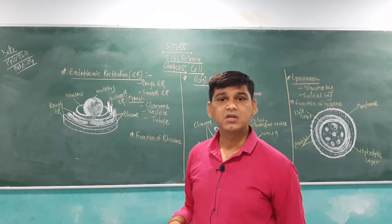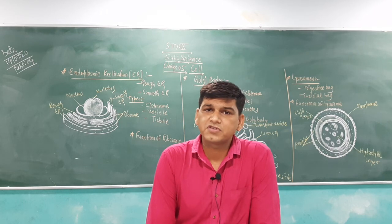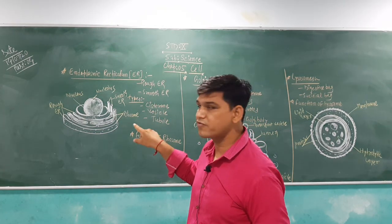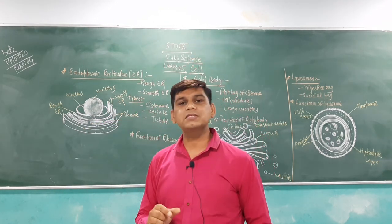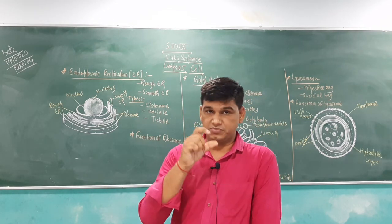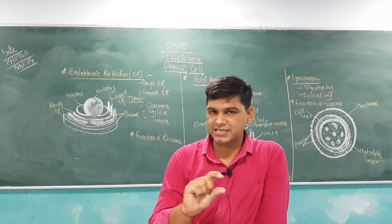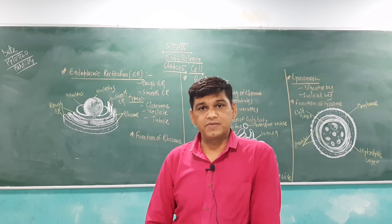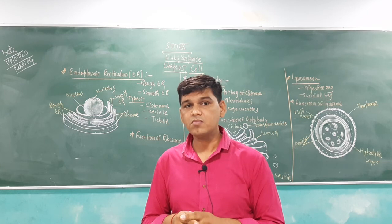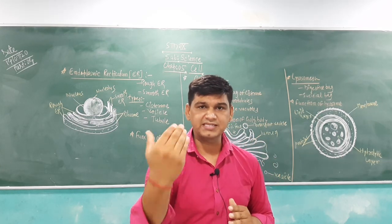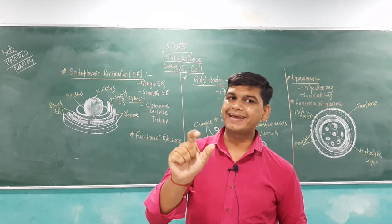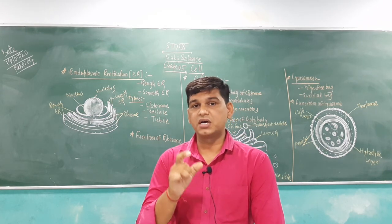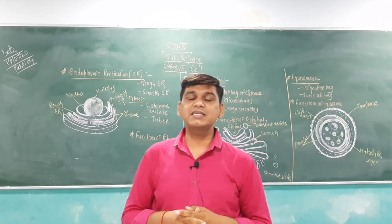First of all, discussing about the ER — that is called endoplasmic reticulum. What do you mean by ER? The endoplasmic reticulum is a tubular network structure. It is a tubular network structure which is found in the cytoplasm. Cytoplasm is what we discussed in previous classes — that is the cell between the cell membrane and nuclear membrane. So endoplasmic reticulum is a tubular network structure found in the cytoplasm. It is like a cylindrical structure of tube with two ends — an opening end and a closing end.